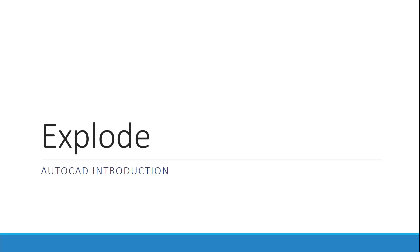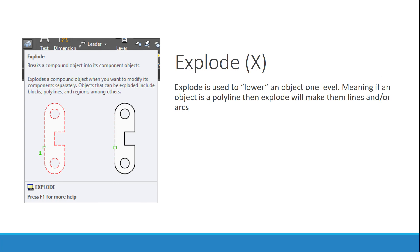Lastly, the explode command. What it does is usually take an object one level down. What I mean by that is — if I create an object that's a polyline, like a rectangle, and I explode that rectangle, it's no longer one object. It's going to become four separate lines, and I'll show you what that does in the lecture demos.